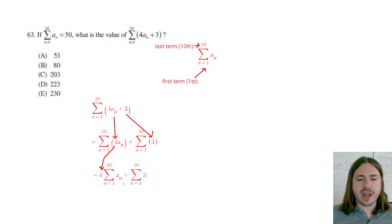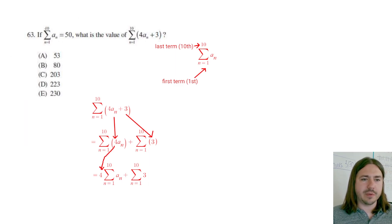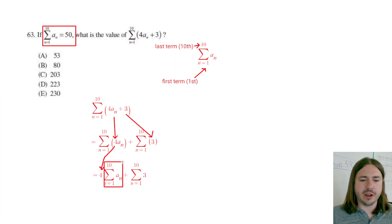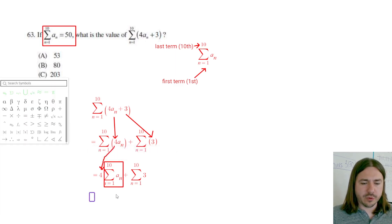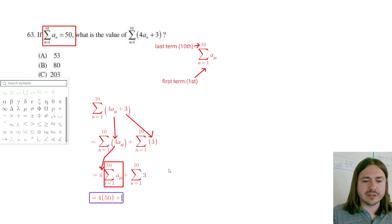Now all we need to do is just find the values of these. They give us from the beginning what the sum of the first 10 terms of the sequence a sub n is. In other words, we already know what this thing right here equals — it equals 50. So this is going to equal 4 times 50, plus whatever this next sum is.